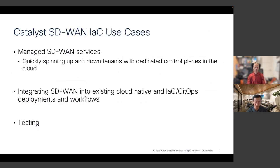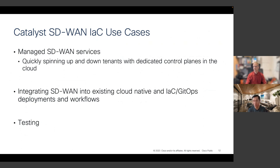There are three key use cases for Catalyst SD-WAN IaC. First, managed service providers can use code with different parameters to quickly spin up SD-WAN infrastructure for different customers. Second, if you already have existing IaC deployments or workflows, you can easily integrate SD-WAN provisioning into them. Third, for testing or development, you can quickly spin up an infrastructure, perform testing, and then tear it down.